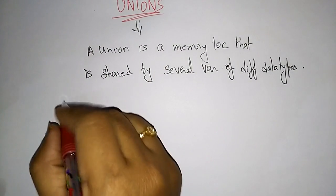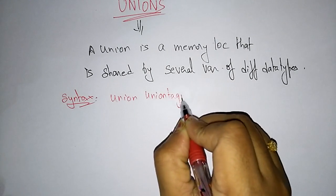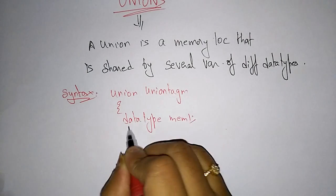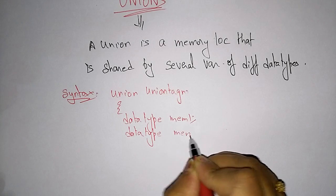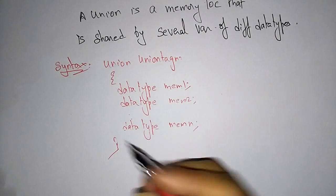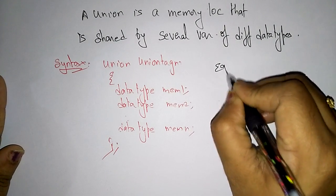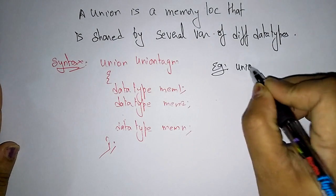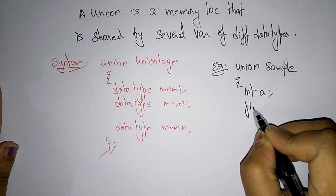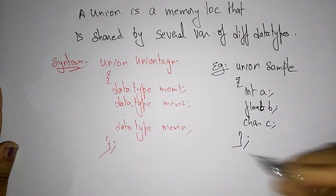Just like a structure, the syntax for union is: you write the union keyword, then a union tag name, followed by different data types — data type member 1, data type member 2, and so on up to member n. For example, you write union with name 'example' and declare int a, float b, character c with three different data types, then close the union with a semicolon.